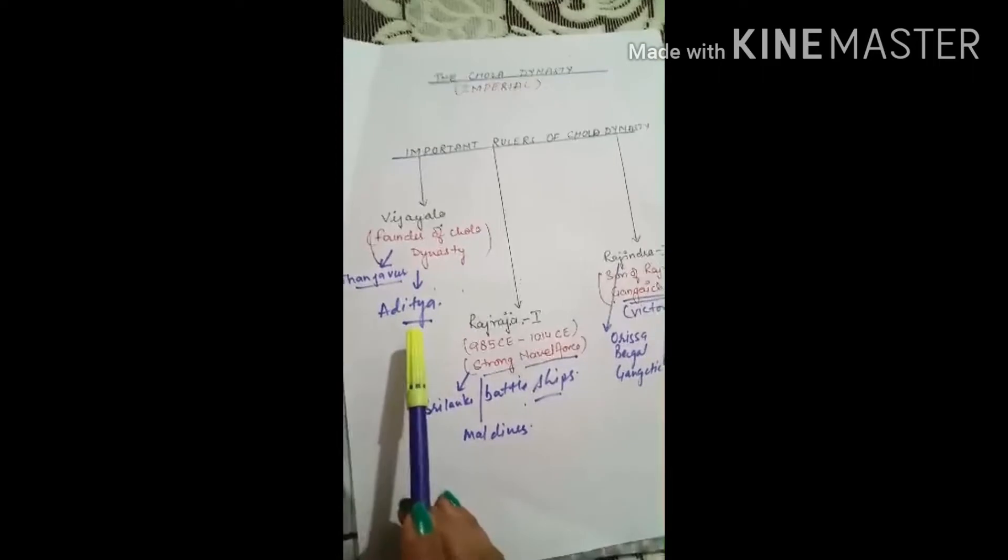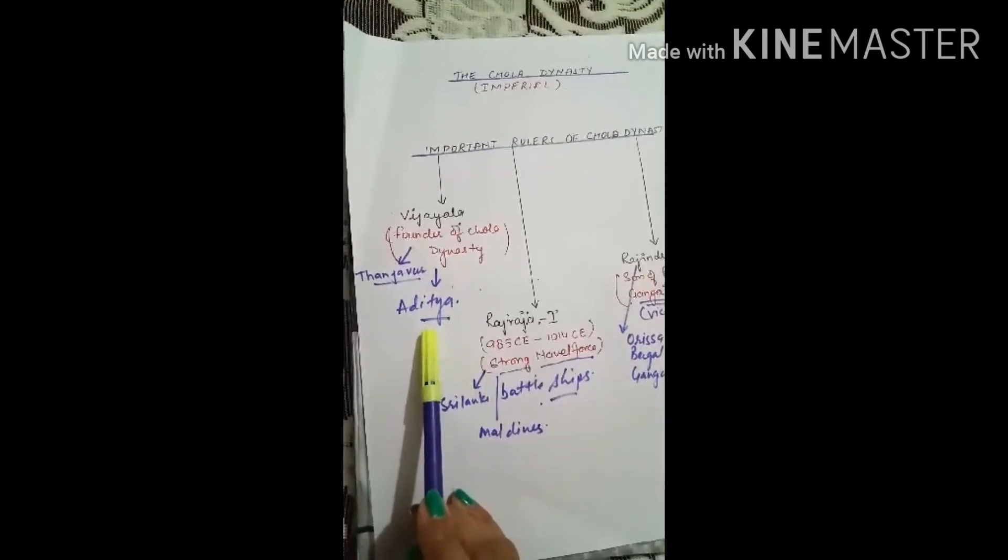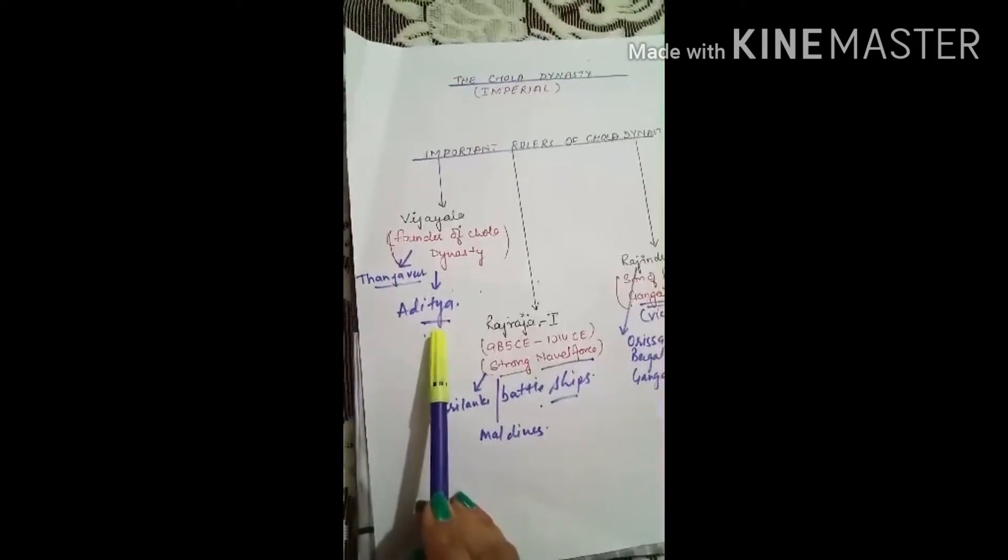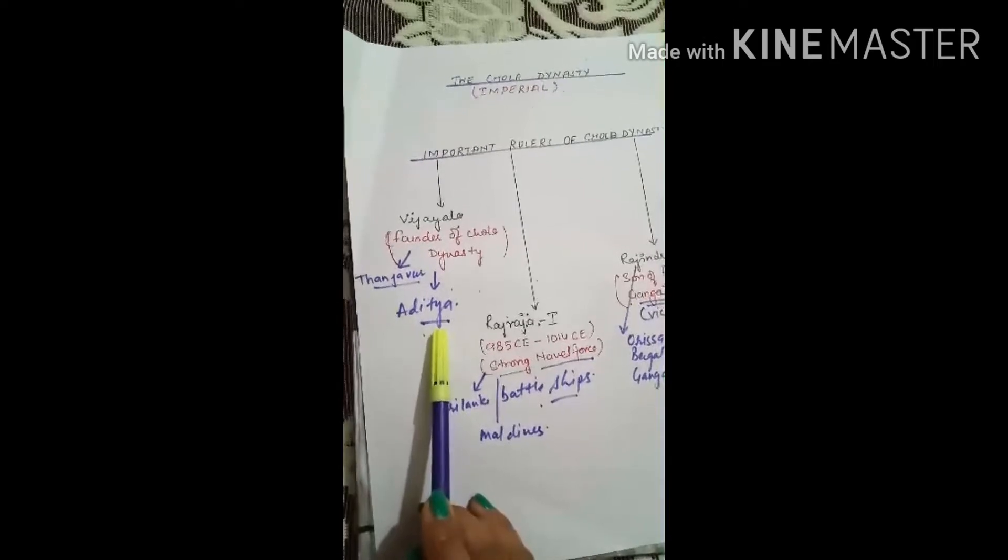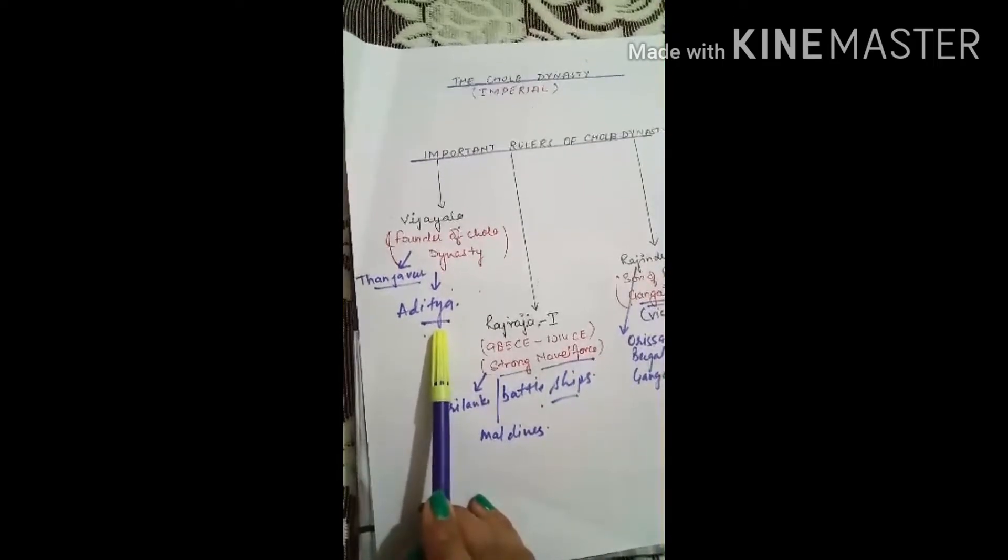His son was Aditya, who expanded his empire and added many more territories of south after defeating Pallavas and Pandyas.